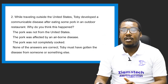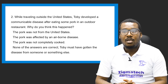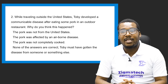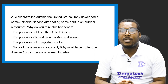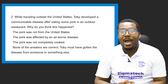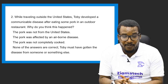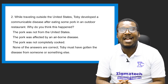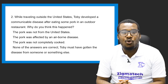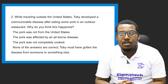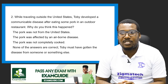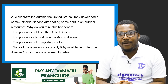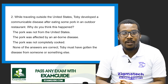Here's a second question: Toby was traveling outside the country and developed a communicable disease after eating pork in an indoor restaurant. Why do you think this happened? A — the pork was not from the United States; B — the pork was affected by an airborne disease; C — the pork was not cooked properly; or D — Toby must have gotten the disease from someone or something else.